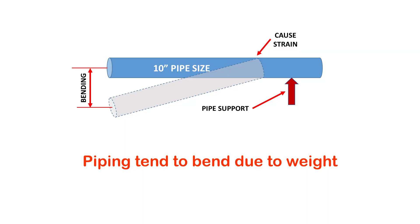If piping is not supported properly, the unsupported portion of the piping tends to bend, which further causes serious damage to the piping system. If a small piece of piping gets damaged, it will put the whole system into shutdown. That may lead to severe monetary loss and severe production loss.